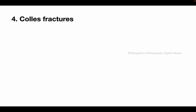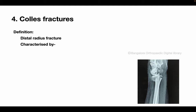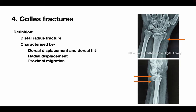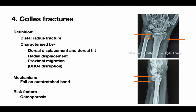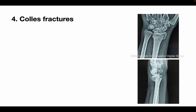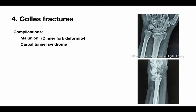A Colles fracture is the distal radial metaphyseal fracture. It is characterized by dorsal displacement and tilt, radial displacement, and proximal migration of the distal fragment carrying the rest of the carpal bones and the hand with it, leading to disruption of the distal radio-ulnar joint. The usual mechanism of injury is fall on an outstretched hand, with old age and osteoporosis posing significant risk. Complications of untreated or inappropriately treated Colles fracture include dinner fork deformity due to malunion, carpal tunnel syndrome due to compression of the median nerve, and rupture of the extensor pollicis longus tendon due to frictional rub over the fracture site, along with DRUJ pain and restricted forearm movements.